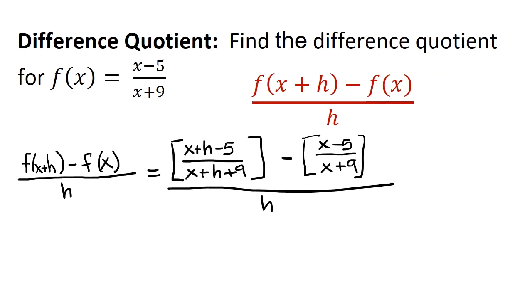So now what I have in the numerator is a complex fraction, and the least common denominator of my complex fraction in the numerator is going to be x plus h plus 9 multiplied by x plus 9. So for the top there, I have to write all of this over the least common denominator. So that's my next step.